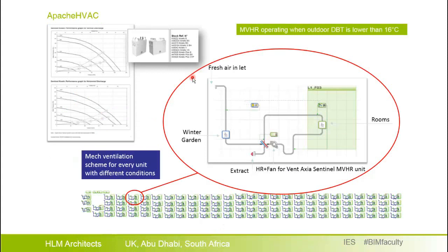Through Apache HVAC we simulate the mechanical ventilation system. We see a simple network scheme where fresh air is taken in and led to the winter garden, from there to the heat recovery unit, and then supplied to the rooms — which are multiplexed, meaning there are multiple rooms in this scheme. Exhaust air is then taken back to the heat recovery unit and exhausted outdoors.